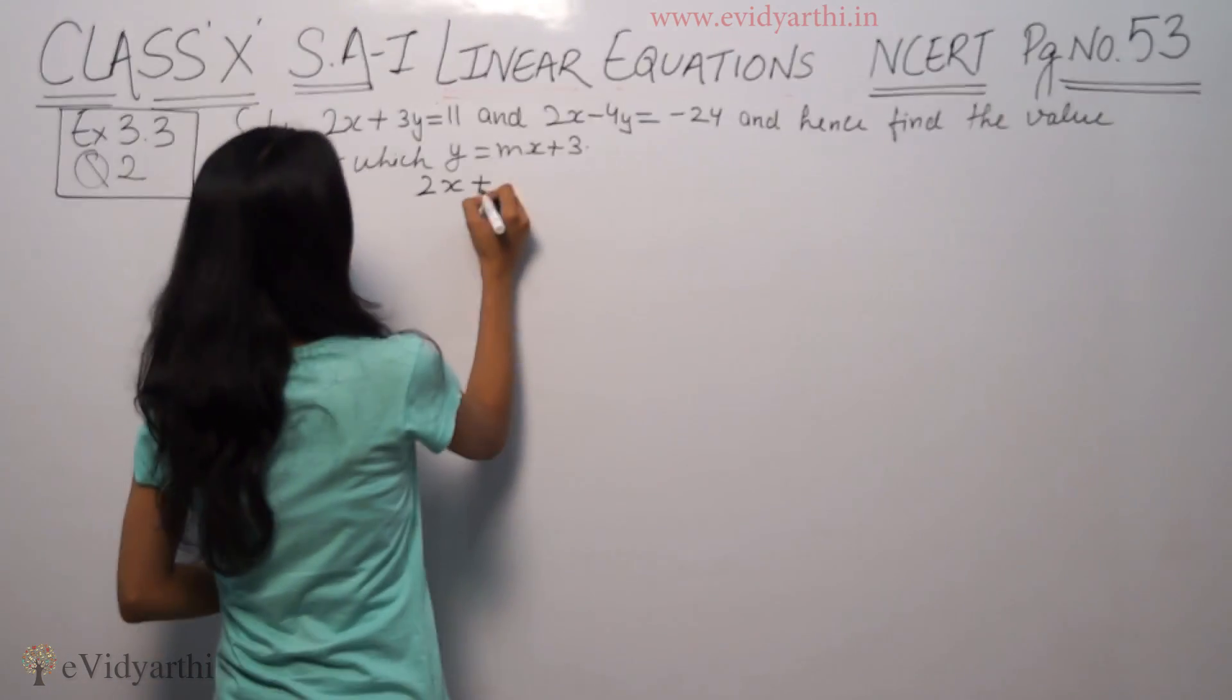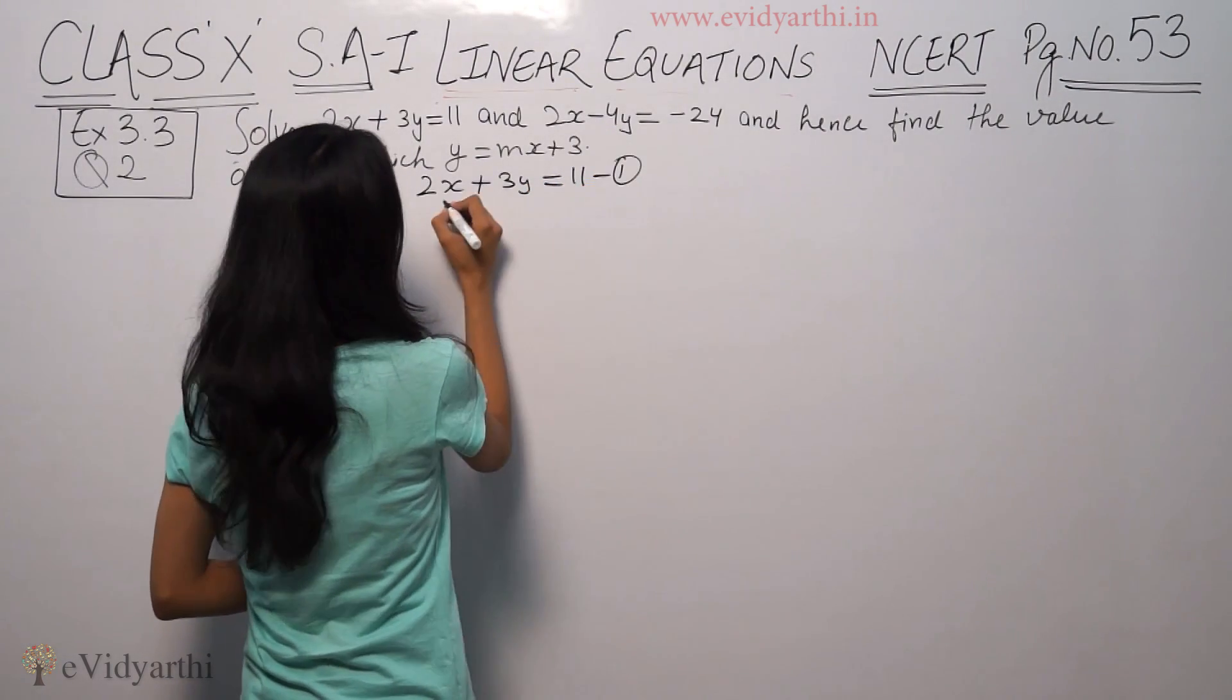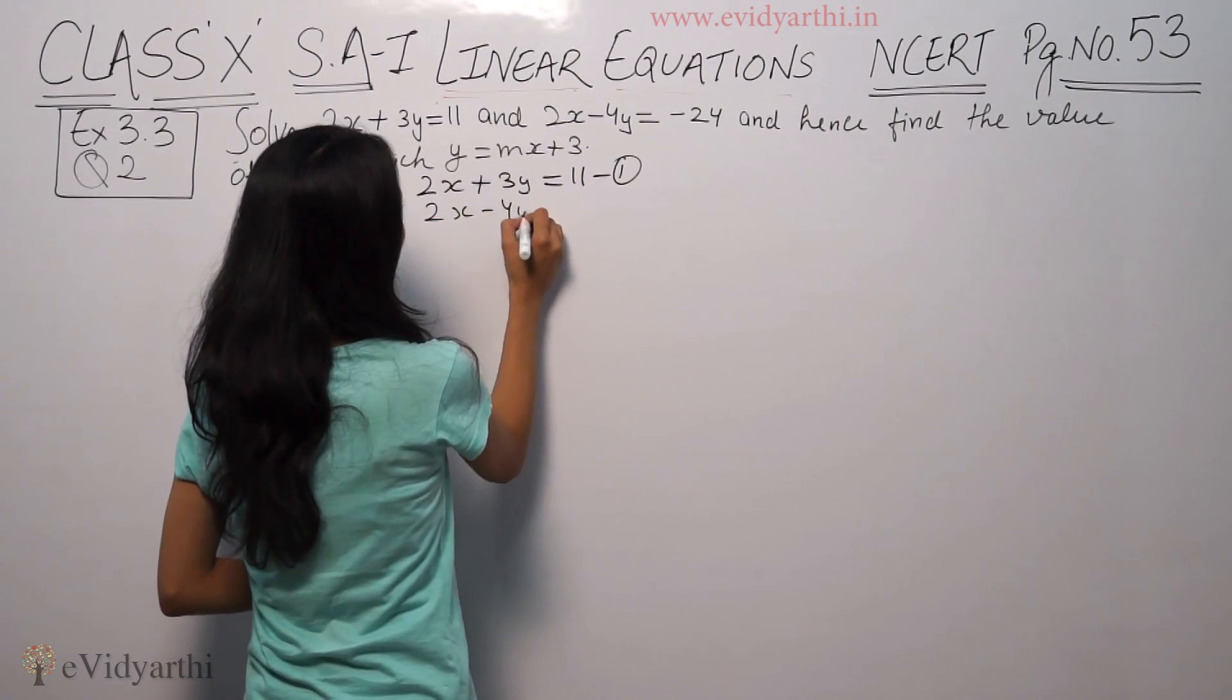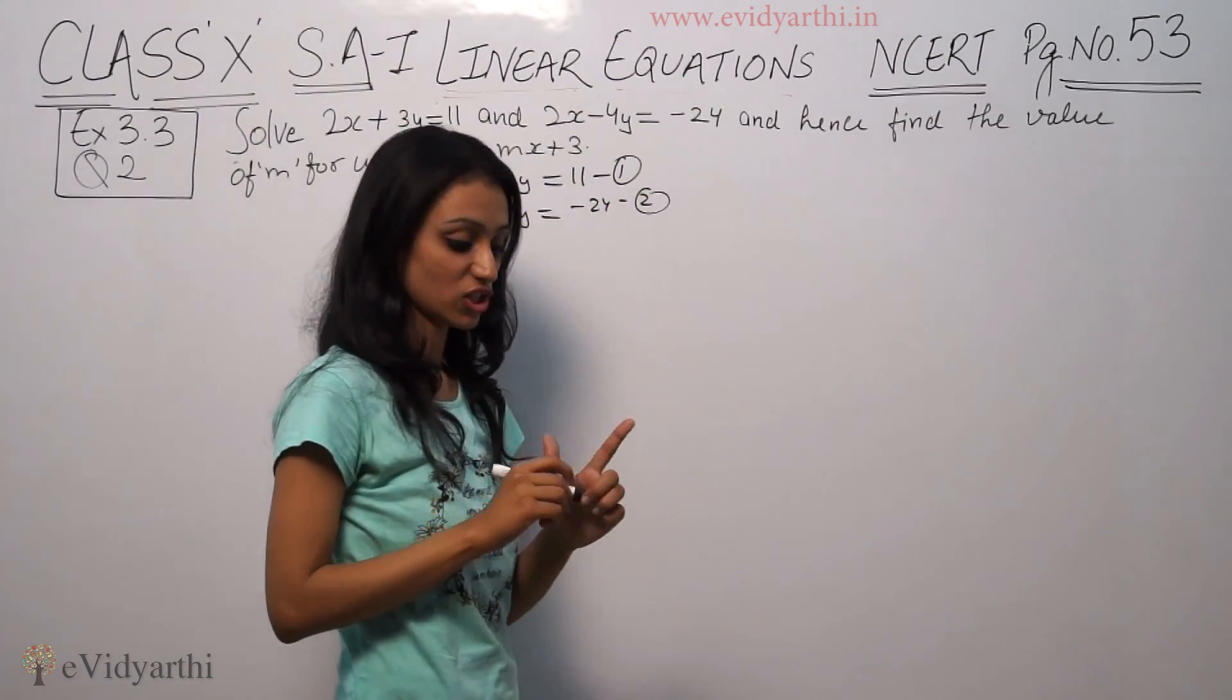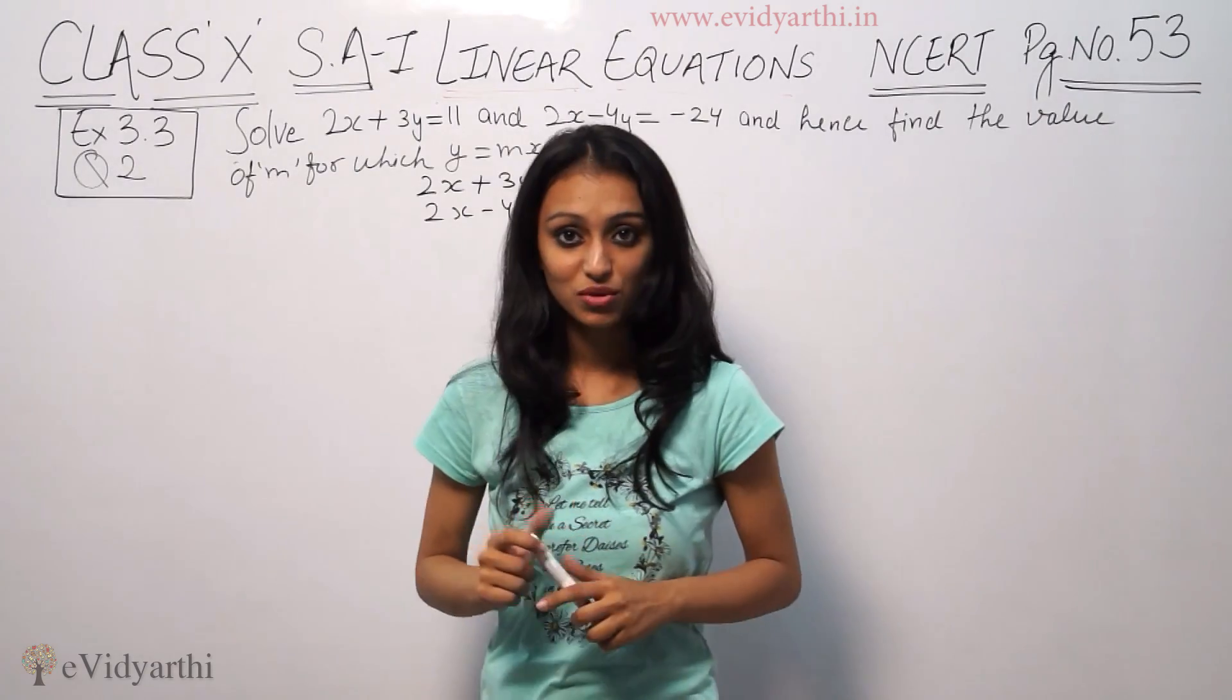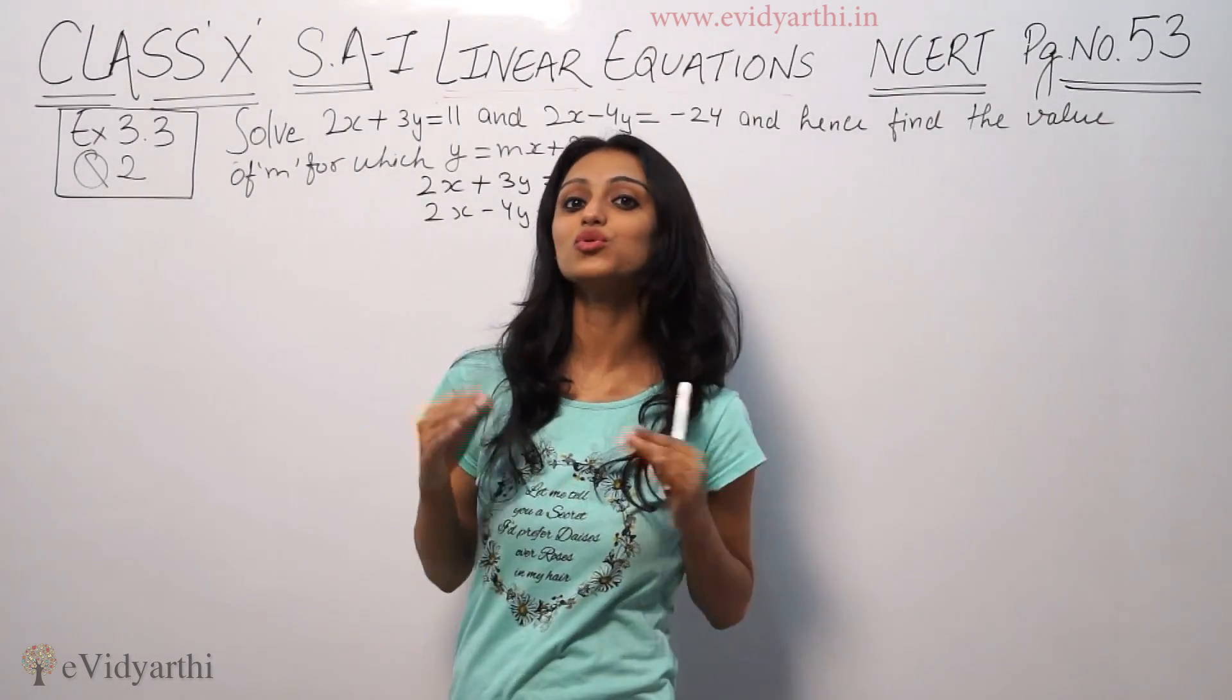So, 2x plus 3y equals 11, this is the first equation. 2x minus 4y equals minus 24, this is the second equation. First we will apply Substitution Method, which we will solve from the first equation to find the value of one variable.